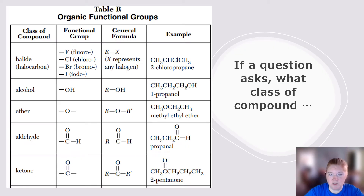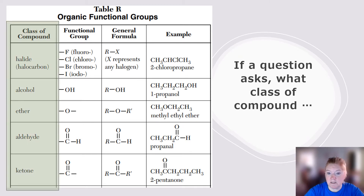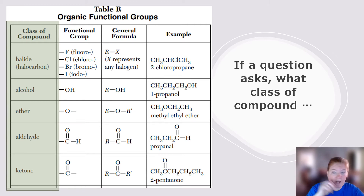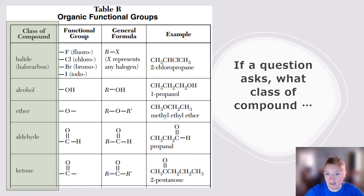If a question asks what class of compound a structural formula or name belongs to, that column is your only answer. It says what class of compound is this — your answer should be 'ether' or 'aldehyde' or 'alcohol,' nothing else. Don't give a fancy name; they're just asking what class of compound.